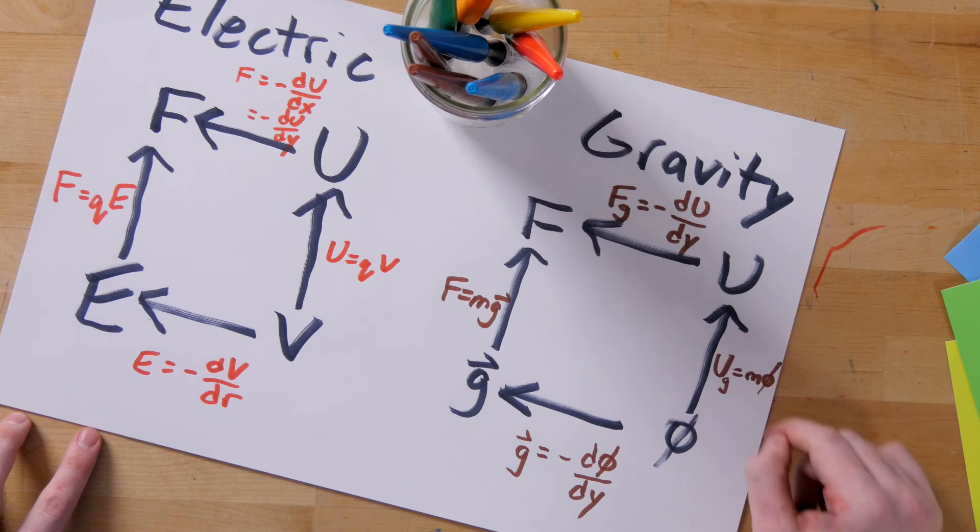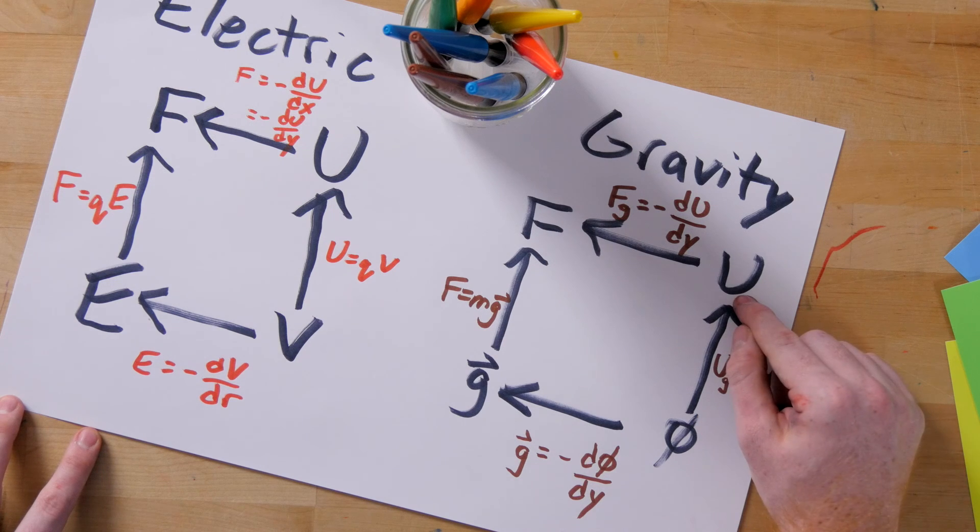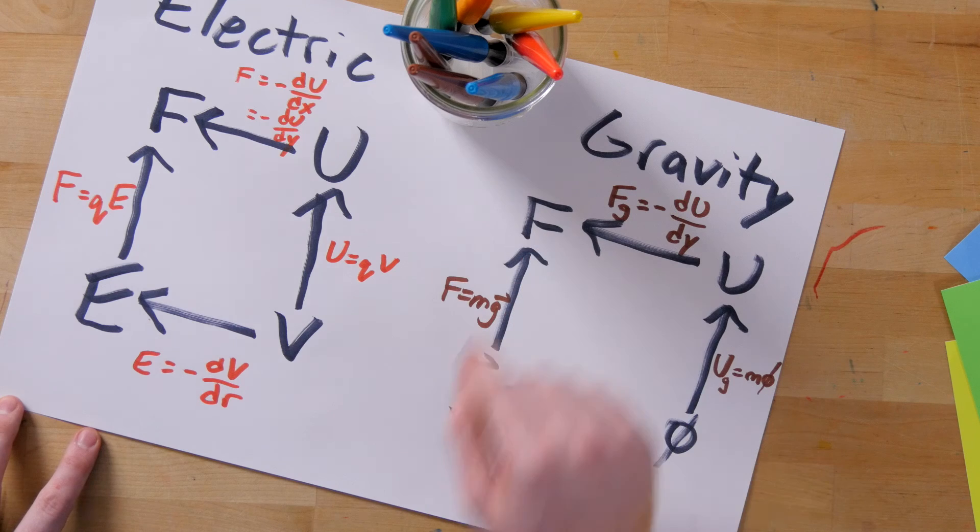Moving from bottom to top, you simply multiply by mass. Gravitational potential times the mass gives you the potential energy. Multiplying g by the mass gives you the force.